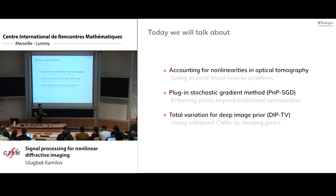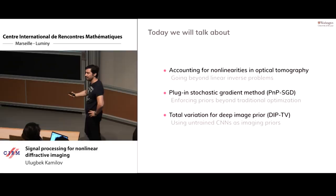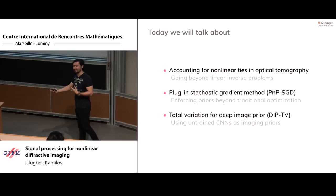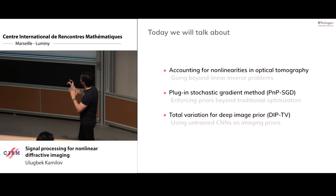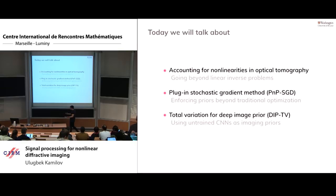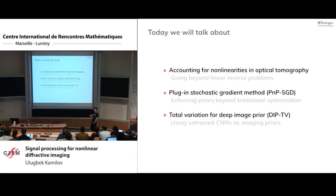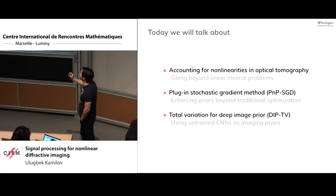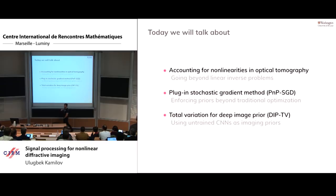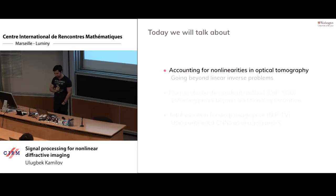I divided the talk into three parts: first, physical modeling of light scattering — particularly modeling multiple light scattering nonlinearity combined with priors using traditional optimization and sparsity. Second, going beyond optimization to learn priors and impose them in image formation. Third, a short but curious part on deep image prior. Let's start with the first part.